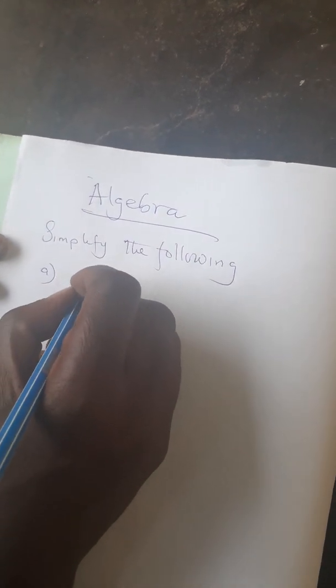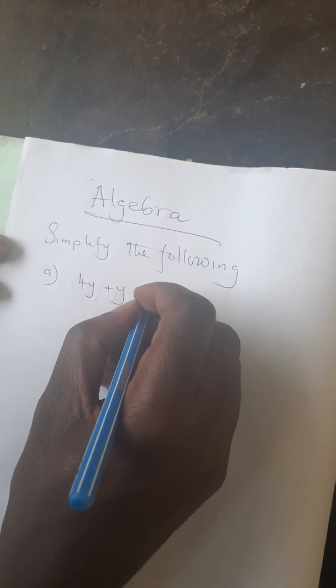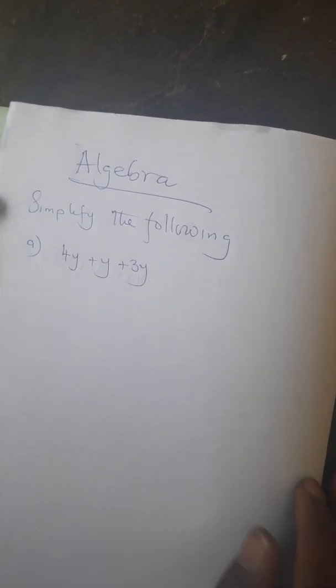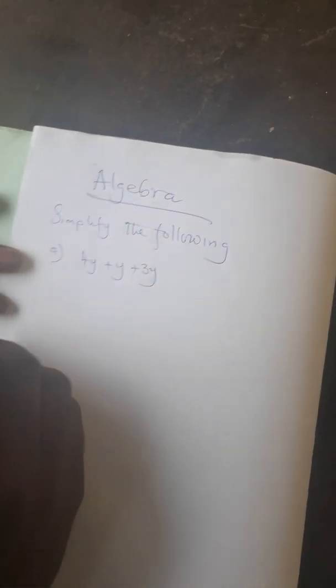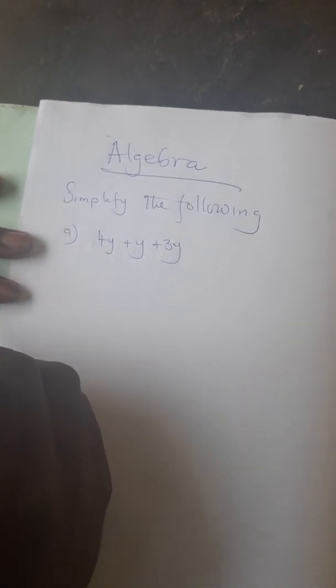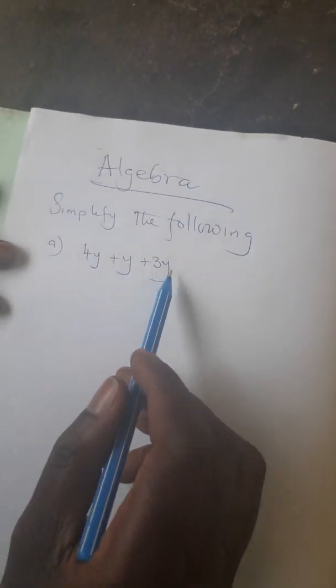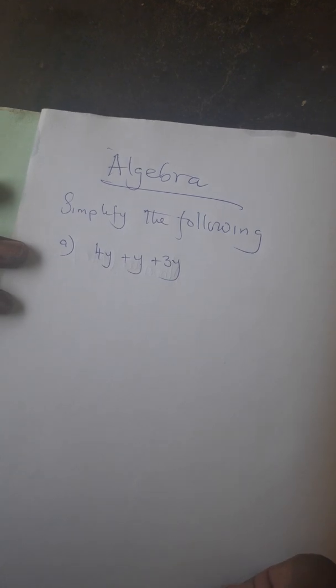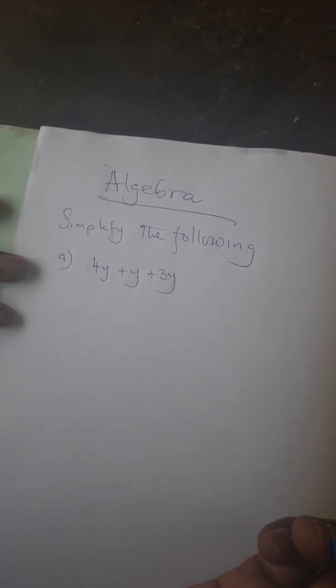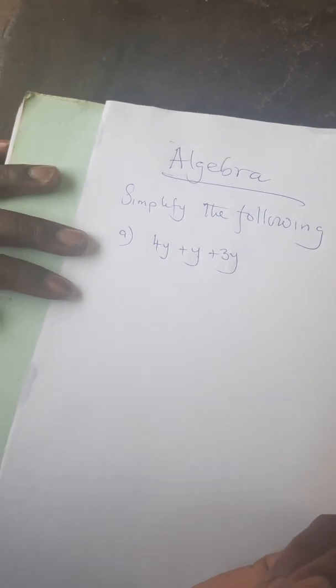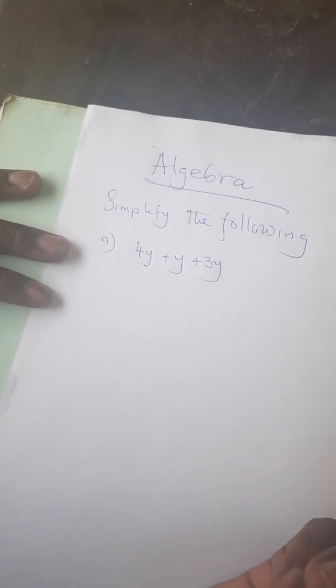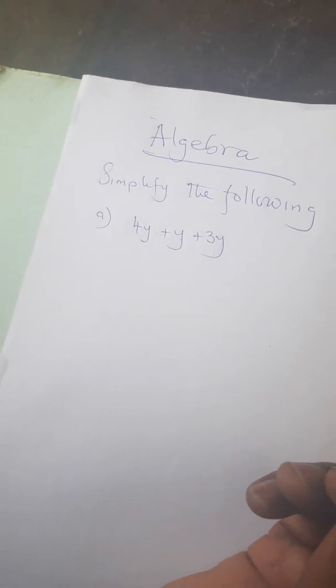Simplify the following: (a) 4y + y + 3y. When we look at this one, we are basically looking at like terms. Going through all these terms: we've got 4y, we've got y, then we've got 3y. So these are like terms. Like terms are simplifiable — we can work with them as they are. We are going to basically deal with the coefficients.